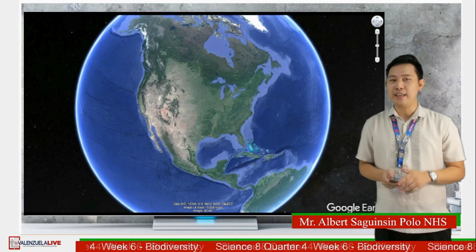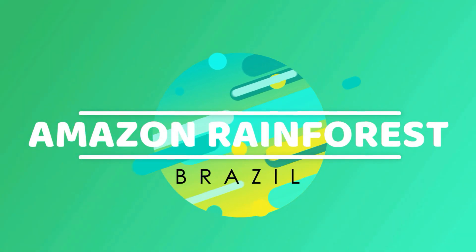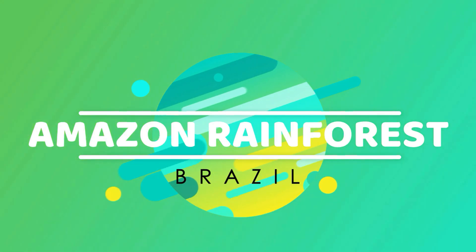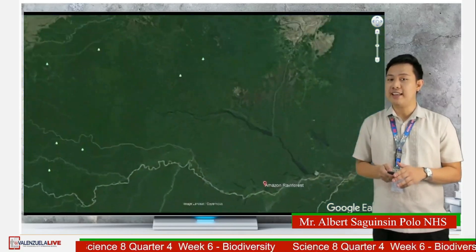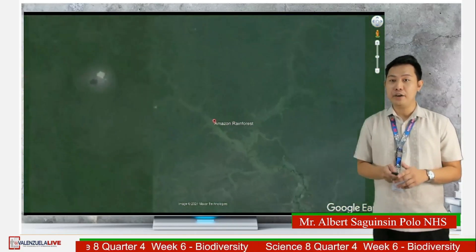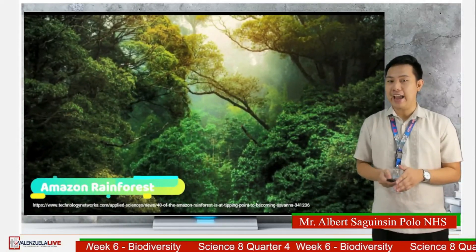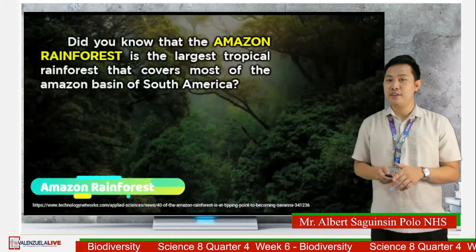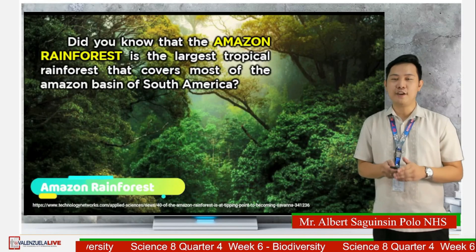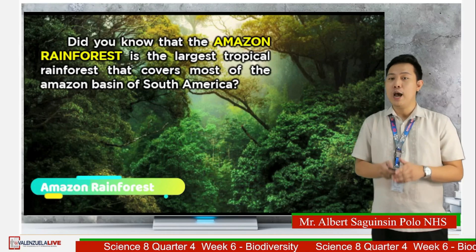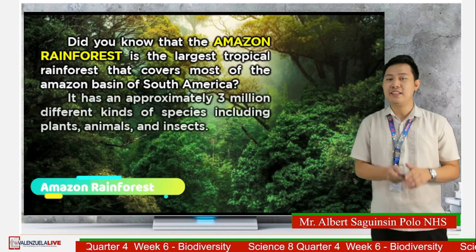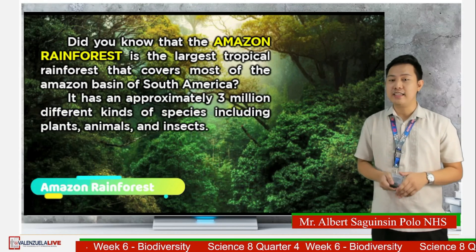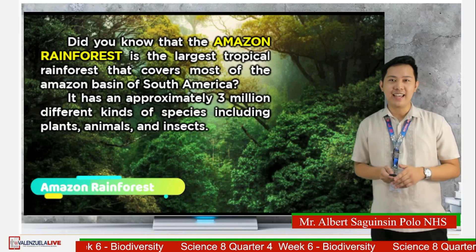Sit back, relax, and enjoy the amazing beauty of our planet. For our first stop is the Amazon Rainforest. It covers much of northwestern Brazil and extends into Colombia, Peru, and other South American countries. Known for its biodiversity, did you know that the Amazon Rainforest is the largest tropical rainforest that covers most of the Amazon basin of South America? It has approximately 3 million different kinds of species including plants, animals, and insects.